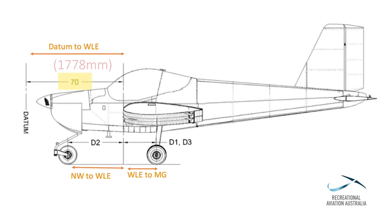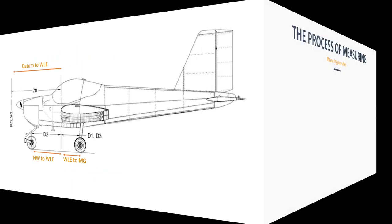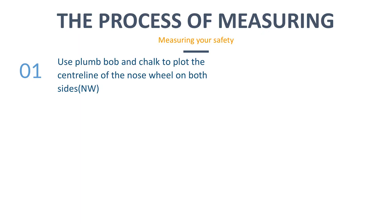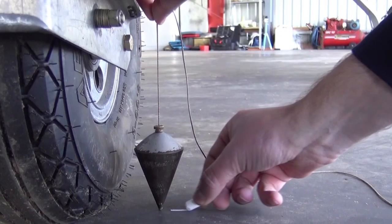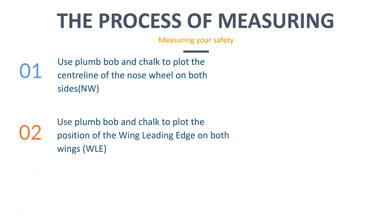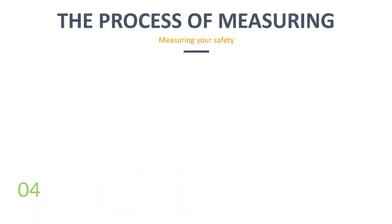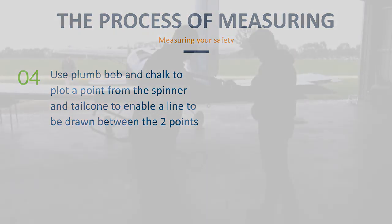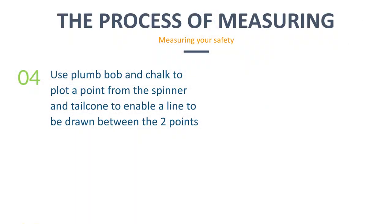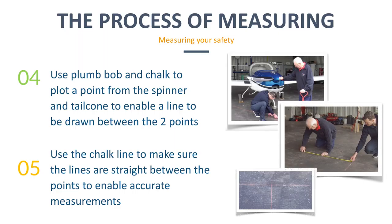The manufacturer has stated the reference datum is 70 inches forward of the wing leading edge. D2 is the distance between the centre line of the nose wheel and the wing leading edge. D1 and D3 represent the distances between the centre line of the left and right main wheels and the wing leading edge. Use the plumb bob to plot the centre line of the nose wheel on both sides, then use the plumb bob to plot the position of the wing leading edge on both wings, and to plot the centre line of the left and right main wheels. Use the plumb bob to plot a point at the spinner and a point at the tail cone to enable a line to be drawn down the centre line of the aircraft. Use the chalk line to make sure the lines are straight between the points to enable accurate measurements when using the measuring tape.